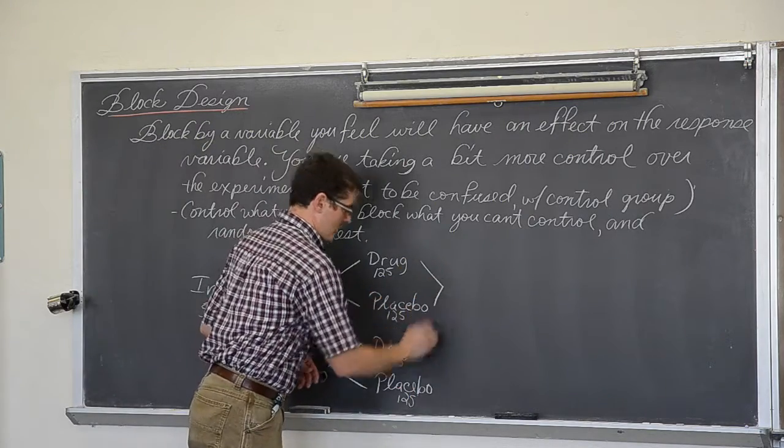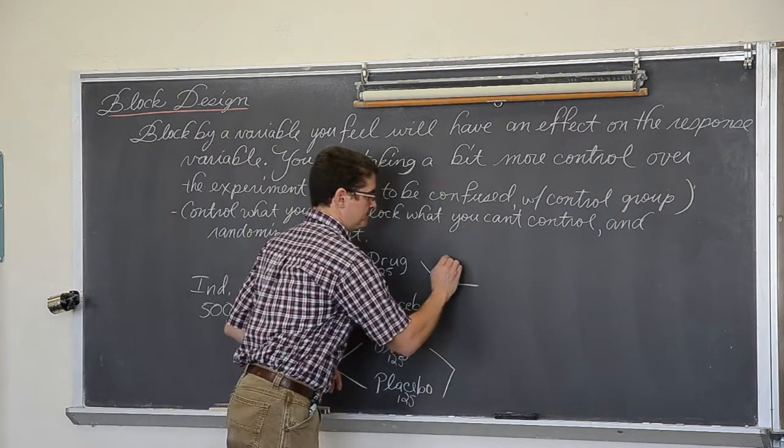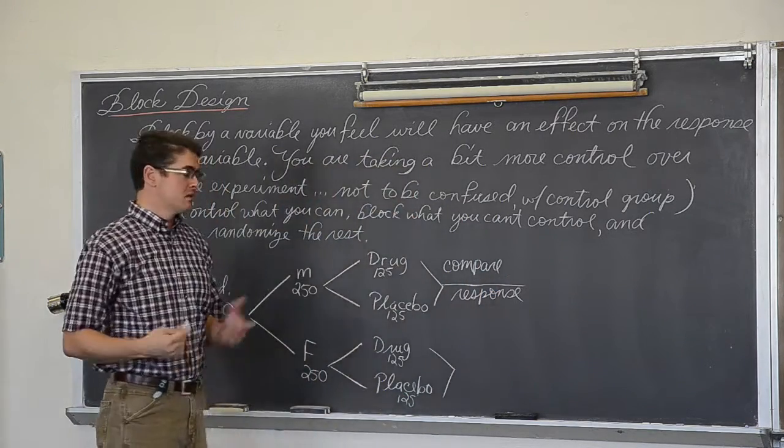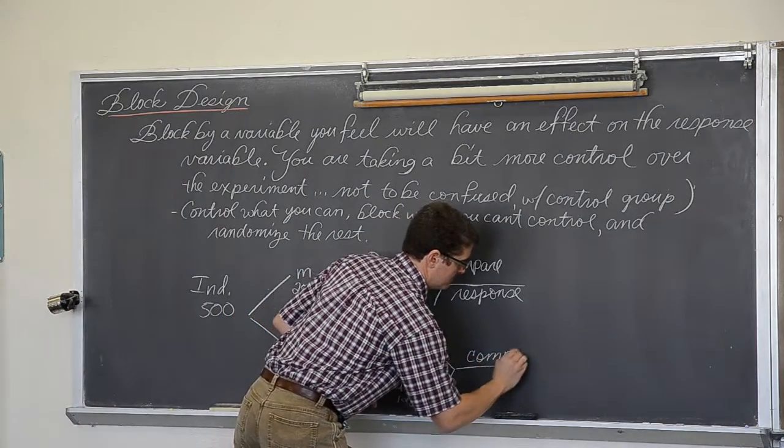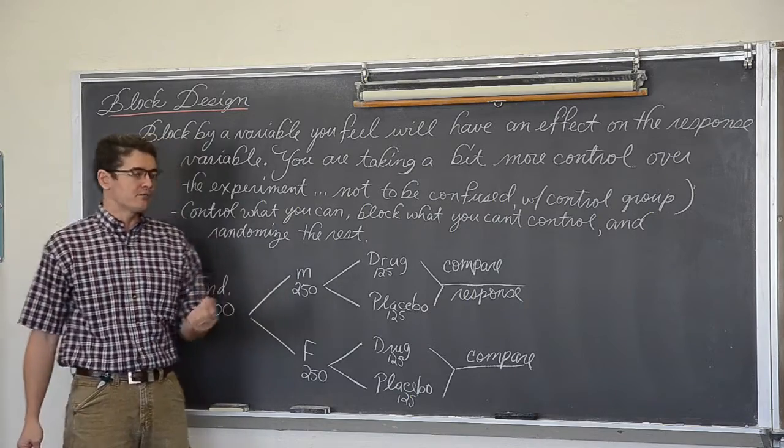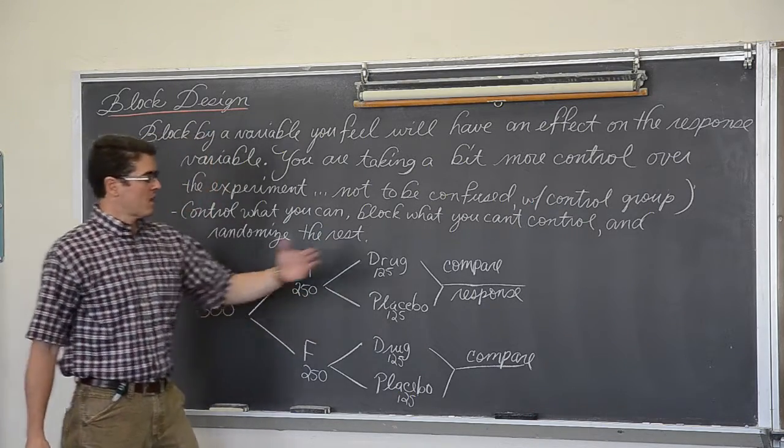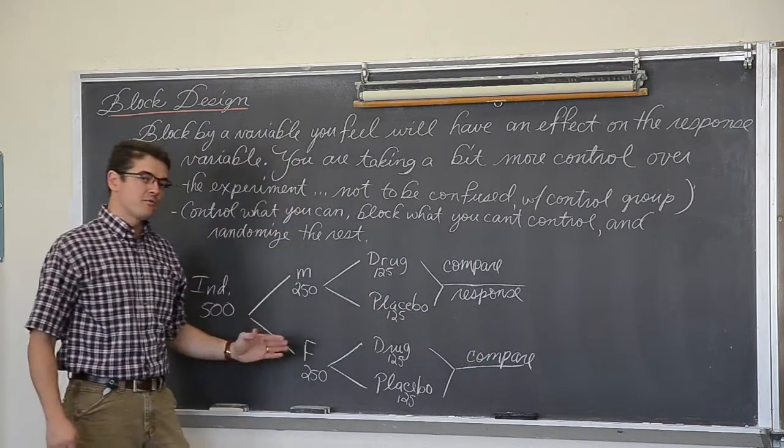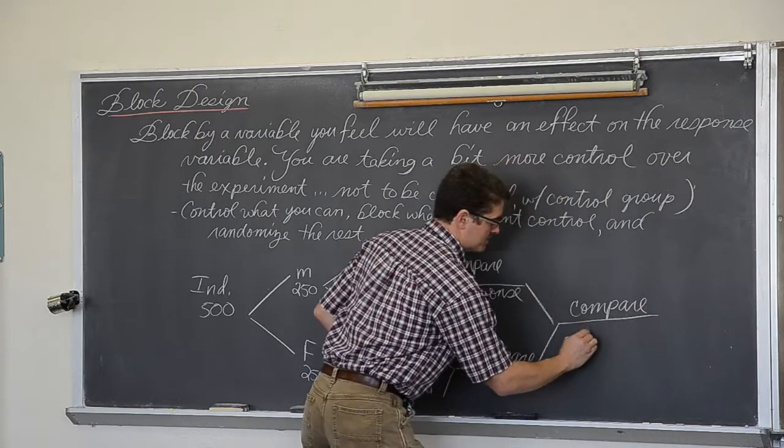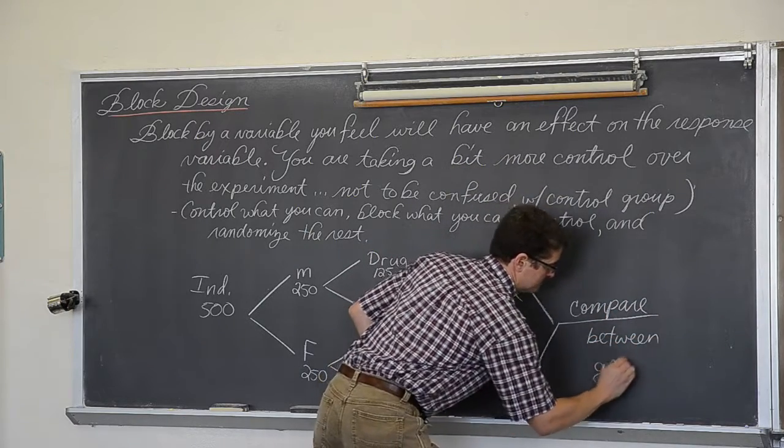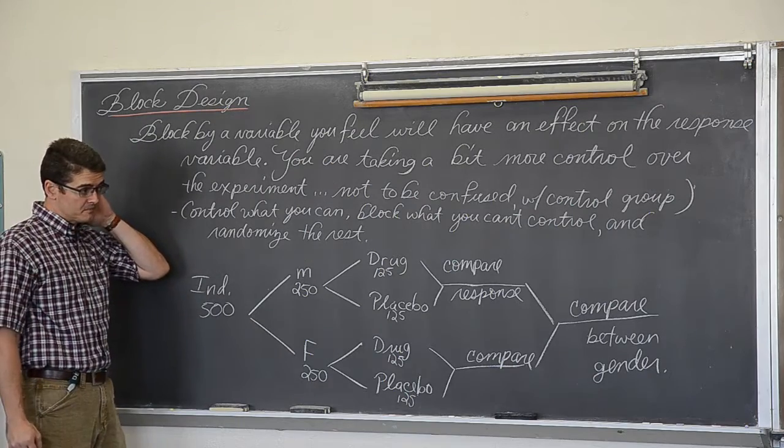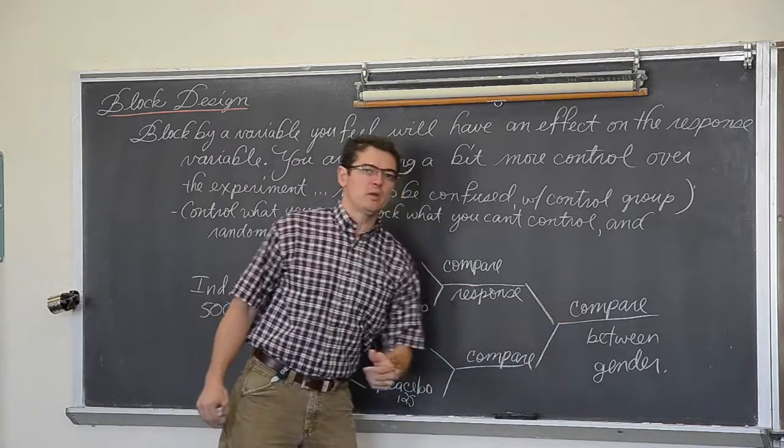Now the purpose of an experiment, of course, is to compare the results. So we are going to compare whatever the response variable is that we are concerned with between the treatment group and the control group. And then of course we did block by gender because we felt that they might possibly respond differently to whatever this treatment is to begin with. So we are not going to just compare within the men and do a comparison for the females, but we are also going to do a comparison between the genders and see if my hunch was correct that the sex of the patient is going to influence how they respond to the drug. So two comparisons between each block, and then finally between whatever variable it is we blocked by.